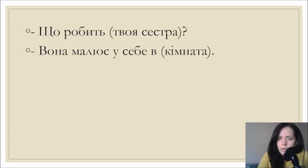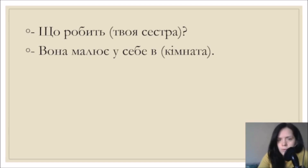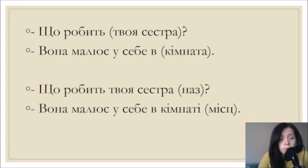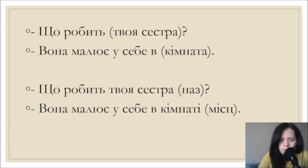Що робить твоя сестра? Вона малює у себе в кімнаті - what is your sister doing? She is drawing in her room. Твоя сестра - nominative, the subject of the sentence. Вона малює - she is drawing. В чому? В кімнаті - locative case, містевий відмінок. We are specifying the location of our sister - she is in her room, so we used locative case.